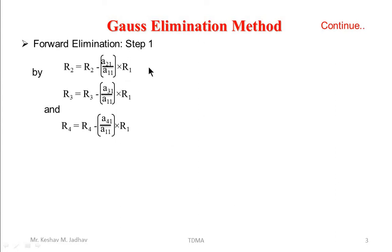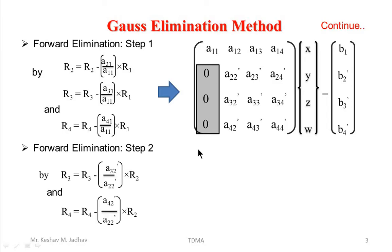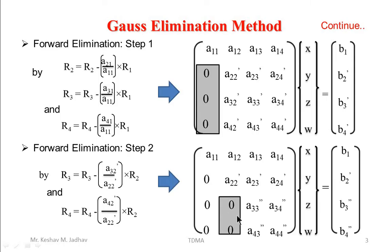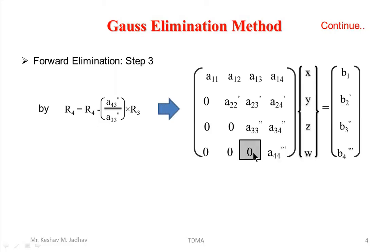In the first step of forward elimination we perform operations to convert certain elements to zero, and we apply these operations to each element of those rows. In the second step we perform operations on those rows similarly. In the third step we perform the R4 operation so that the remaining element converts to zero.